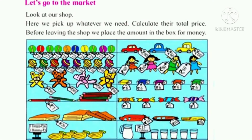Now when we go to the market, we see many shops. Now look at this shop — this is our shop. Here we will pick whatever we need, and then according to the price, we will calculate the total price of the things we purchase. And that amount we will write in the given box.